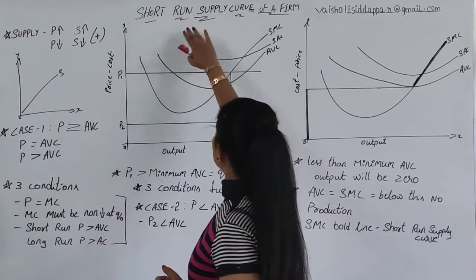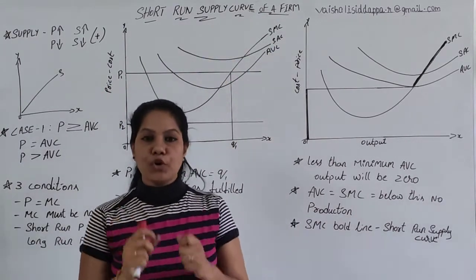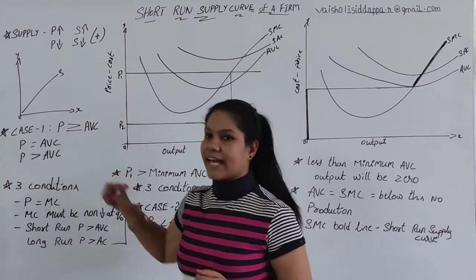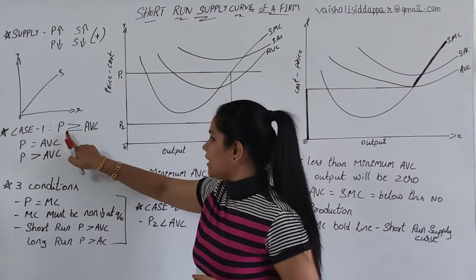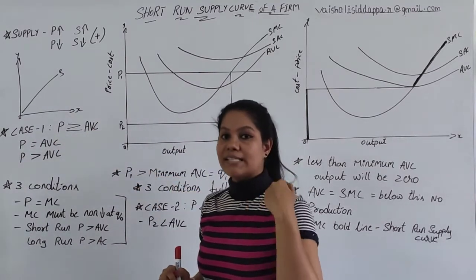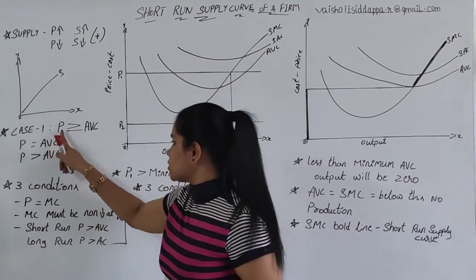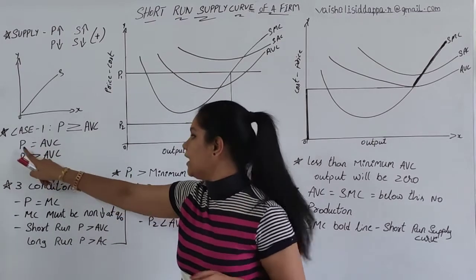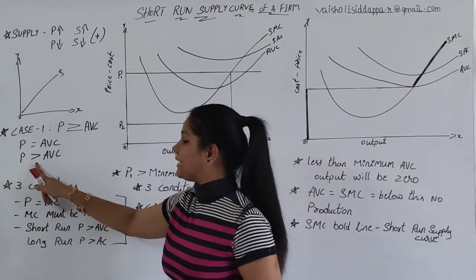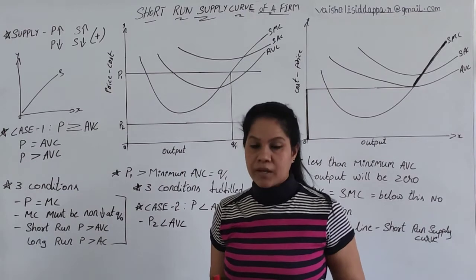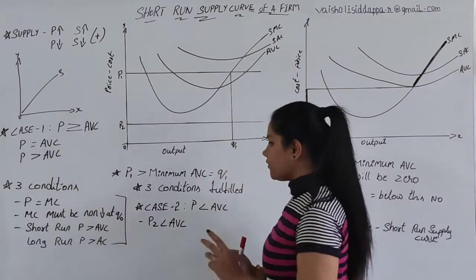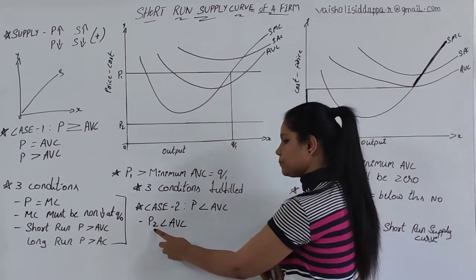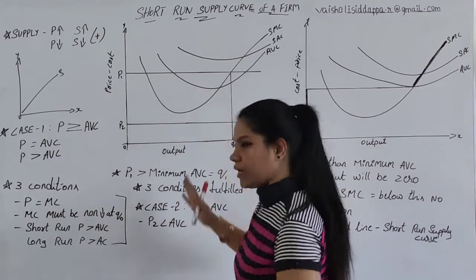Now, the short-run supply curve of a firm. To prove this, we have two cases. The first case talks about price being equal to AVC or greater than AVC. The second case is P is lesser than AVC.